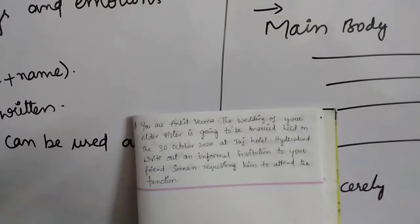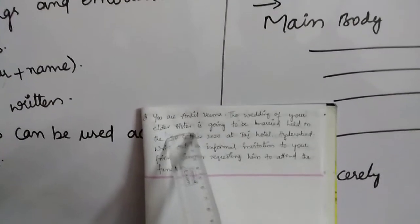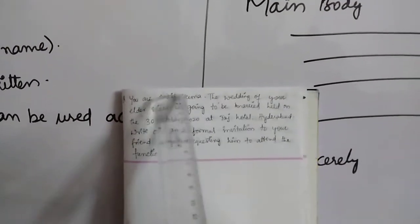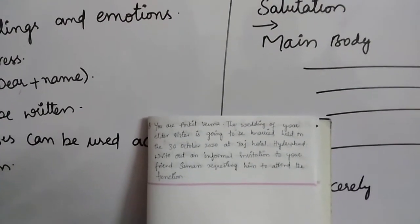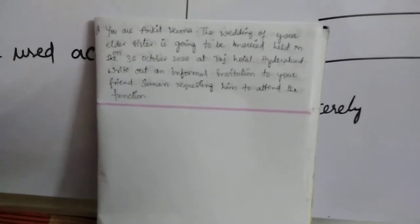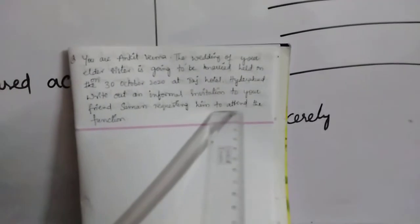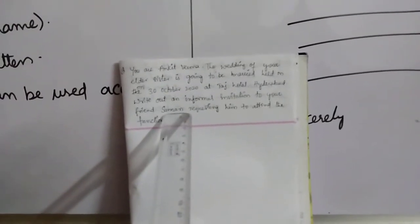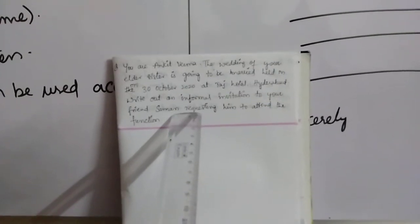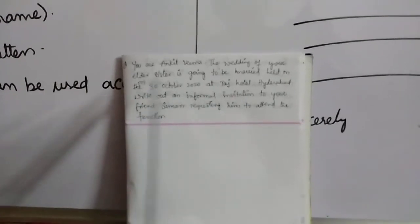Now here is the assignment. You are Ankit Varma. The wedding of your elder sister is going to be held on 30th October 2020 at Taj Hotel, Hyderabad. Write an informal invitation to your friend Suman, requesting him to attend the function.